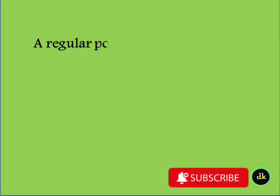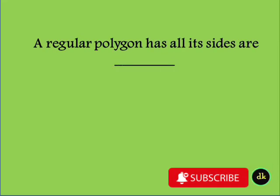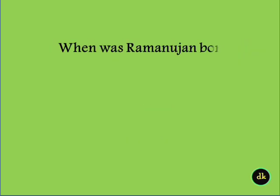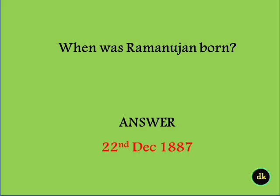An irregular polygon does not have all its sides equal. When was Ramanujan born? 22nd December 1887.